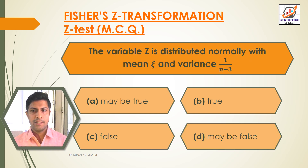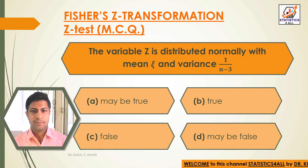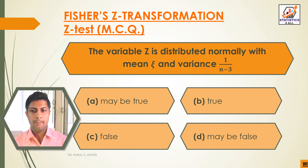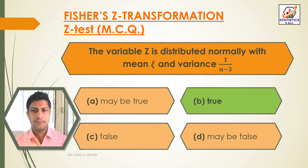Next question. The variable Z is distributed normally with mean xi and variance 1 upon (n minus 3). Option A: May be true. Option B: True. Option C: False. Option D: May be false. Here we have the answer: Option B, True.